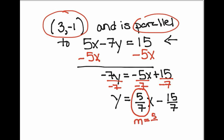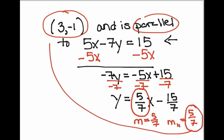Since the slope of this line is 5 over 7, the slope I'm going to use in my equation is also going to be 5 over 7. That double tick mark is a symbol for parallel. So I'm going to use 5 over 7 as my slope and plug it in along with the point (3, -1).